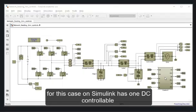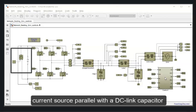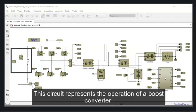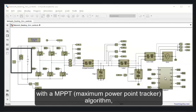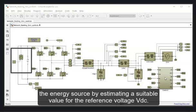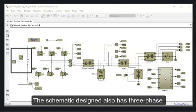The schematic design for this case on Simulink has one DC controllable current source parallel with a DC link capacitor that replaces the previous DC voltage source. This circuit represents the operation of a boost converter with an MPPT, a maximum power point tracker algorithm, which guarantees the maximum power production from the energy source by estimating a suitable value for the reference voltage VDC.